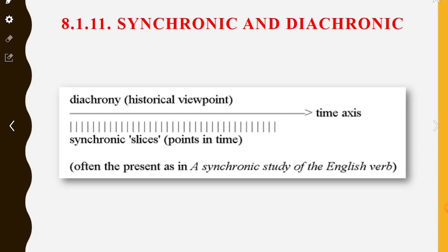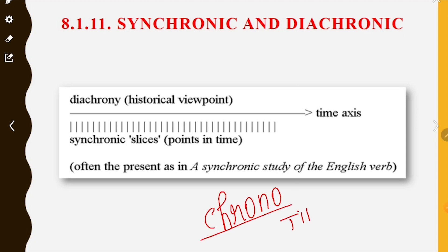The root word Chronos means Time. We can learn a language synchronically or diachronically. Diachronic refers to a historical point of view.